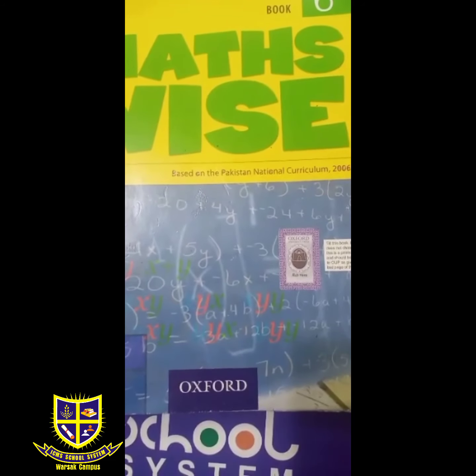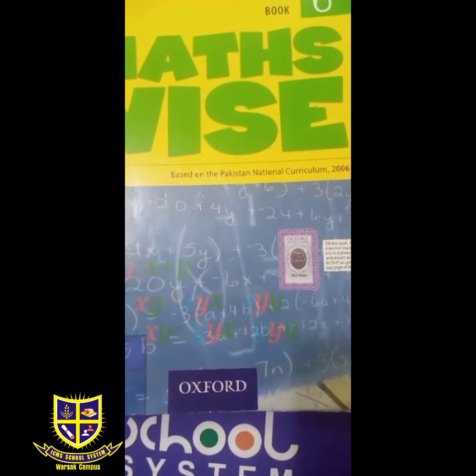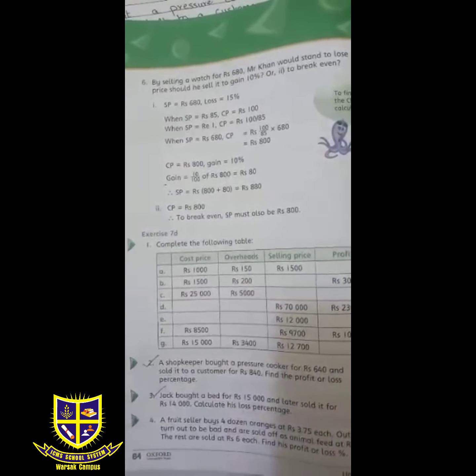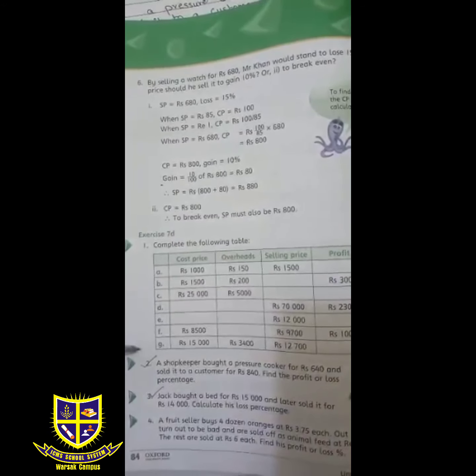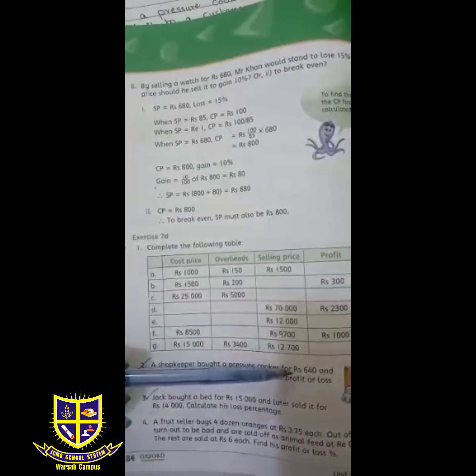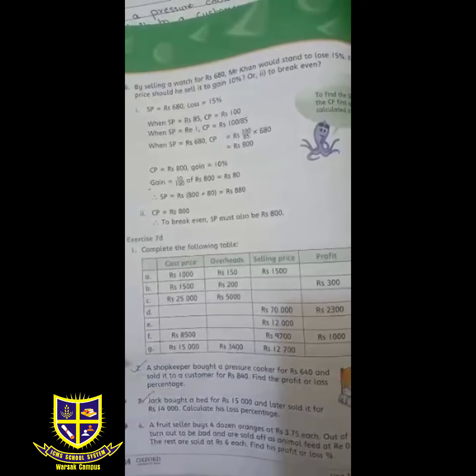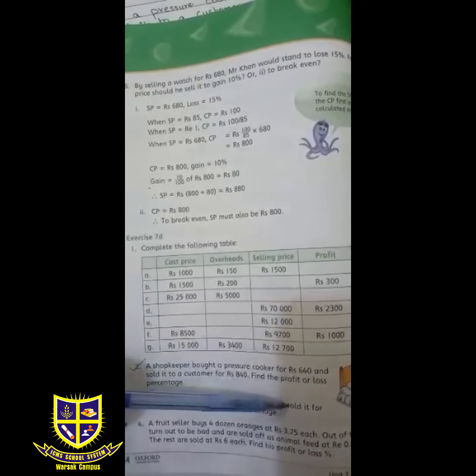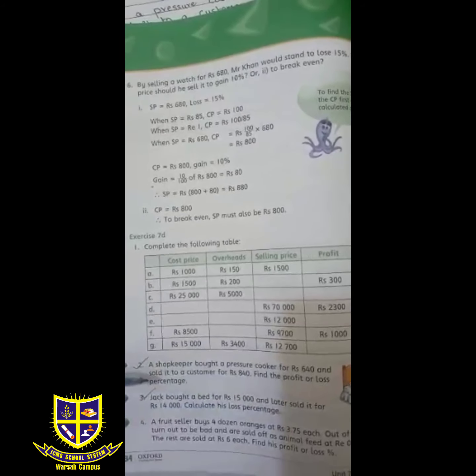Exercise 7D page number 84. Question number 2: A shopkeeper bought a pressure cooker for rupees 640 and sold it to a customer for rupees 840. Find the profit or loss percentage.